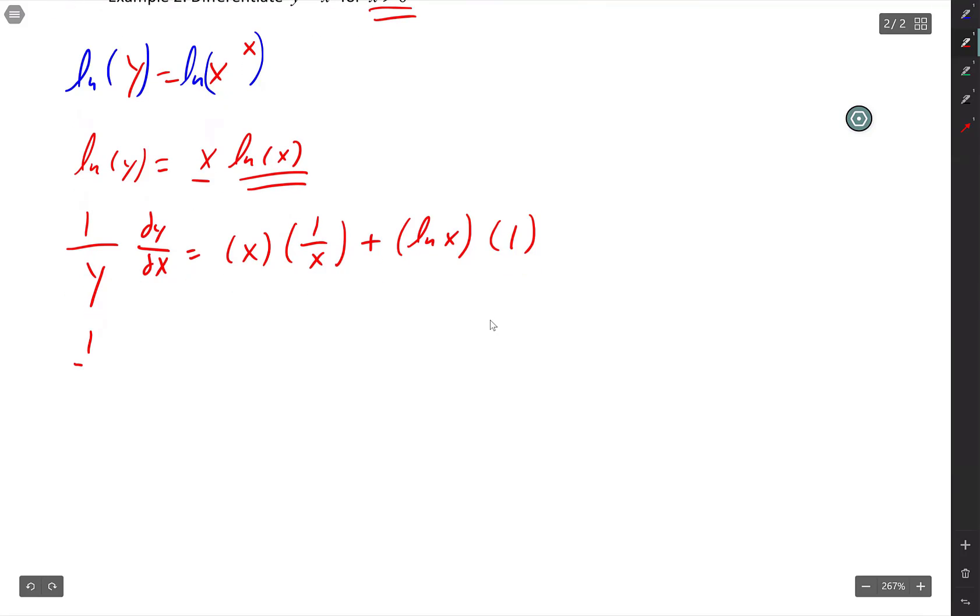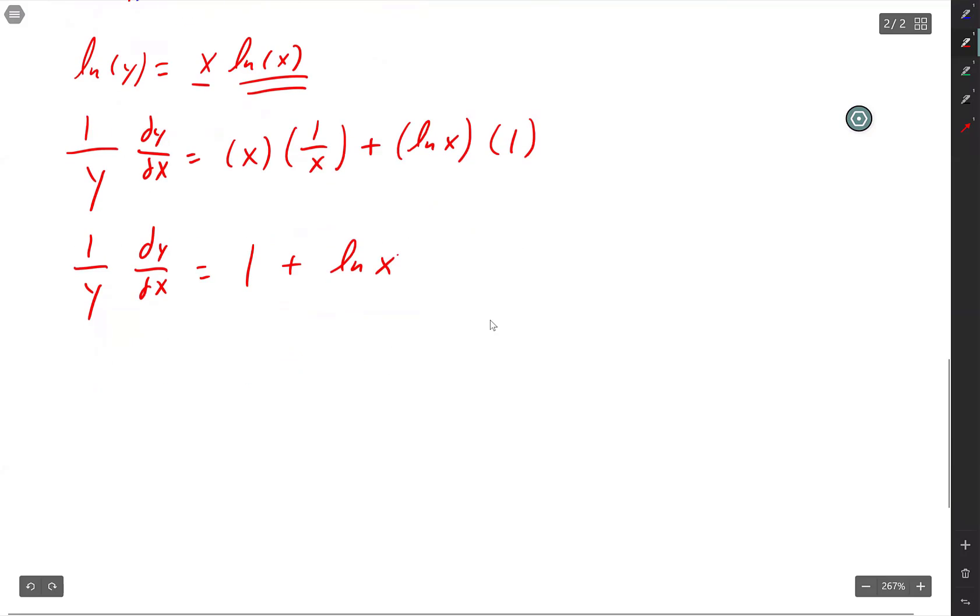So let's see what we get. 1 over y, dy/dx. So that's just cancel out. So you just get 1. Plus ln x. Now I'm going to multiply everything by y. So times y times y. So you have dy/dx.